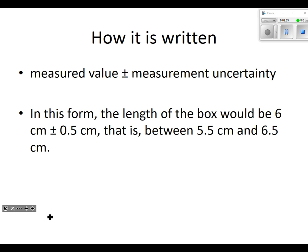This is how it's written: measured value plus or minus measurement uncertainty. In this form, the length of the box would be 6 cm ± 0.5 cm. That is, it's between 5.5 and 6.5. How did we get those? We went 6 minus 0.5 and 6 plus 0.5, somewhere in that range.